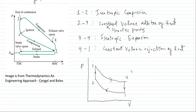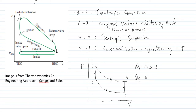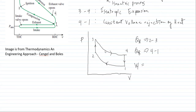Let us discuss some simple formulas. From process 2 to 3, we have Q_A — the addition of heat. From process 4 to 1, we have Q_R — the rejection of heat. The work of the cycle is equal to the heat added minus the heat rejected: W = Q_A − Q_R.